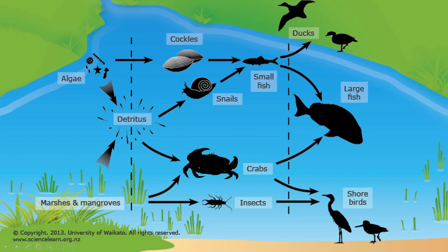Terrigenous sediment is far from the only thing that ends up being frequently deposited in deltas. Remember how I already described estuaries, which commonly coexist with deltas, as the sort of biological companion to deltas? Well, when the estuarine organisms die, they will commonly settle into the often gentle waters of the delta, and under the right conditions, will be preserved as fossils. Such estuarine organisms include fish, crustaceans, and insects, among many other animals.